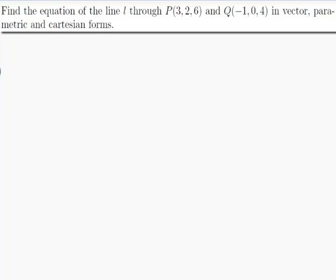The question is: find the equation of the line L through P(3,2,6) and Q(-1,0,4) in vector, parametric, and Cartesian form. First, let's figure out what it means by the equation of a line. A line is a set of points, and each of those points has coordinates. The equation of a line is a rule which tells you if a point is on the line or not, by telling you about its coordinates.